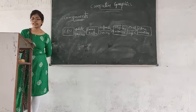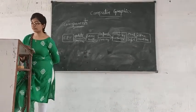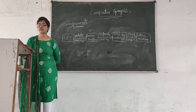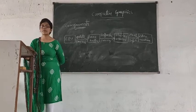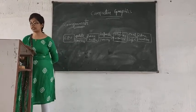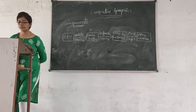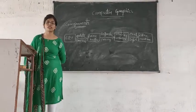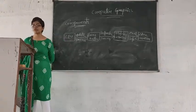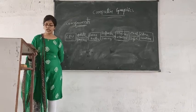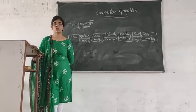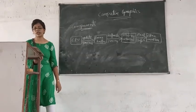Now we will see the classifications of Computer Graphics. First is Passive Computer Graphics and second is Interactive Computer Graphics. Passive Computer Graphics refers to things like static websites where you can control your computer. Interactive Computer Graphics means visualizations, running websites, and animations.